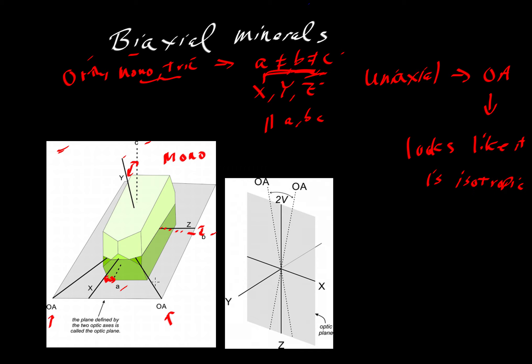It's a special direction. When you look in this direction here, if you make this special cut perpendicular to that optic axis, then in that particular cut, it will appear as if all the rays are moving in the same velocity. And so it'll look like it's isotropic. But with uniaxial minerals, there was only one special direction, which is also coinciding with the C axis. Here, we have two special directions.